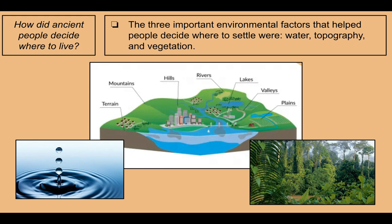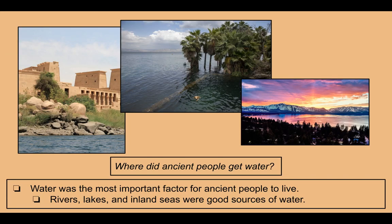Water — like the picture on the left — topography, shown in the center picture, and vegetation on the right. Where did ancient people get their water? Water was and still is the most important factor for people to live. They would get it from rivers, lakes, and inland seas. The picture on the left is the Nile River in Egypt. The center picture is the Sea of Galilee in modern-day Israel. And the picture on the right is Lake Tahoe here in California — an example of a natural lake.